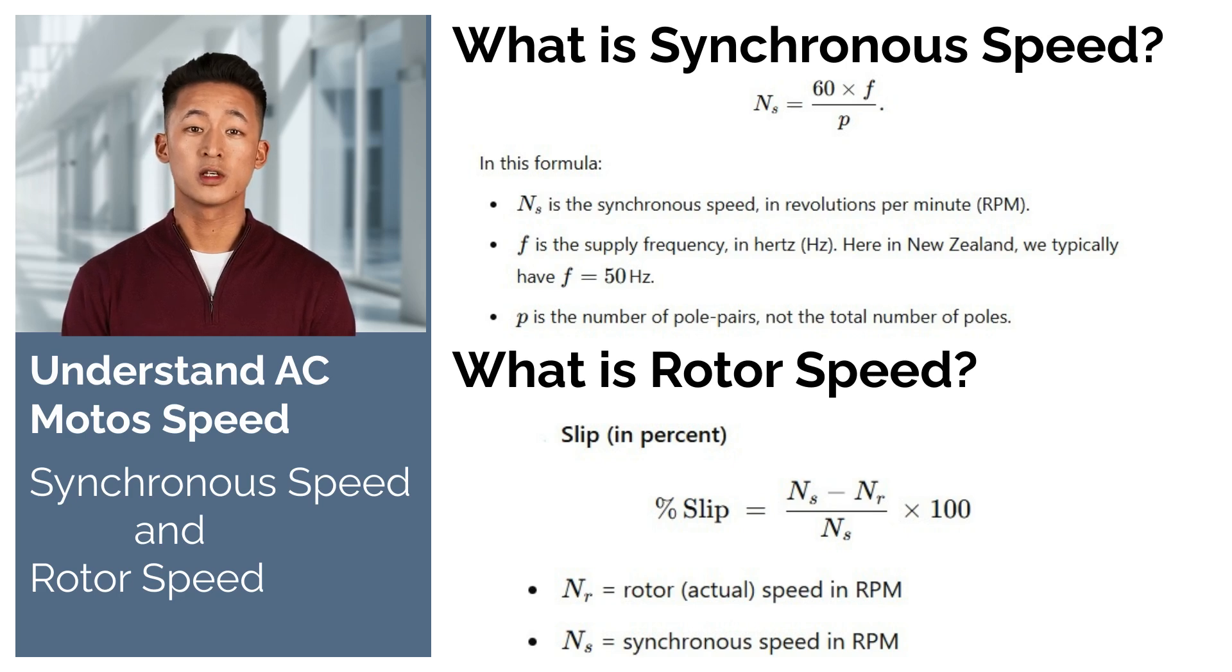The difference in speed between the synchronous speed and rotor speed is called slip. Slip, measured as a percentage, is calculated using this formula: slip percent equals the quantity synchronous speed minus rotor speed, divided by synchronous speed, multiplied by 100.